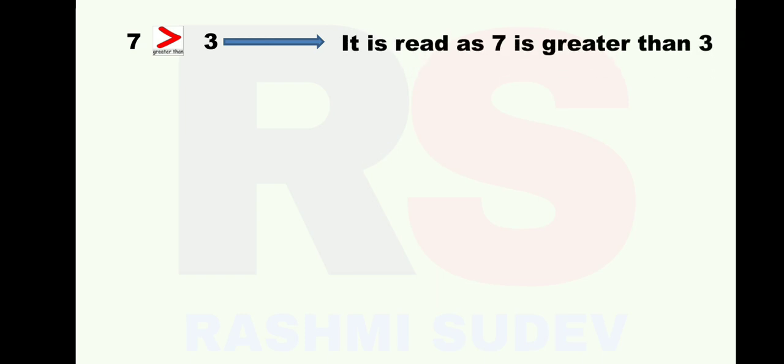7 and 3. Here, 7 is the bigger number and 3 is the smaller number. So what sign will you put here? You will put a greater than sign, because 7 is before 3, and among these two numbers, 7 is the bigger number and 3 is the smaller number. Therefore, you are going to read this as: 7 is greater than 3.